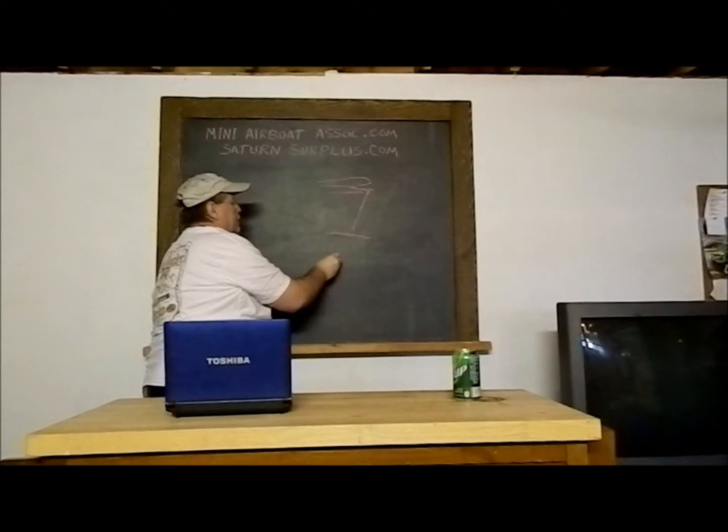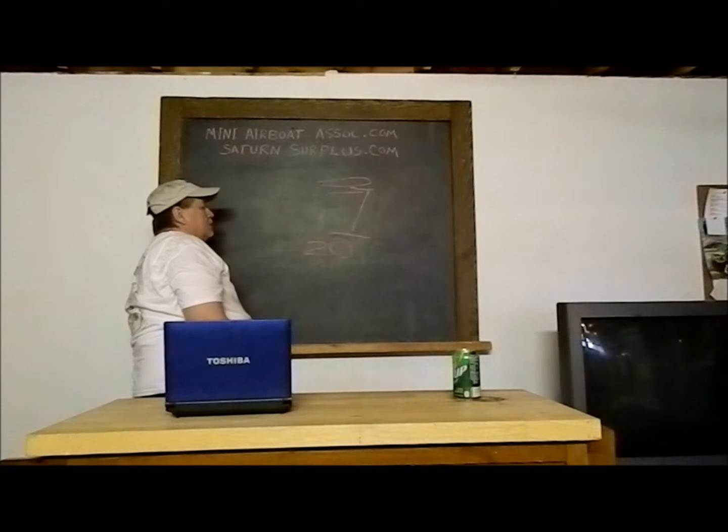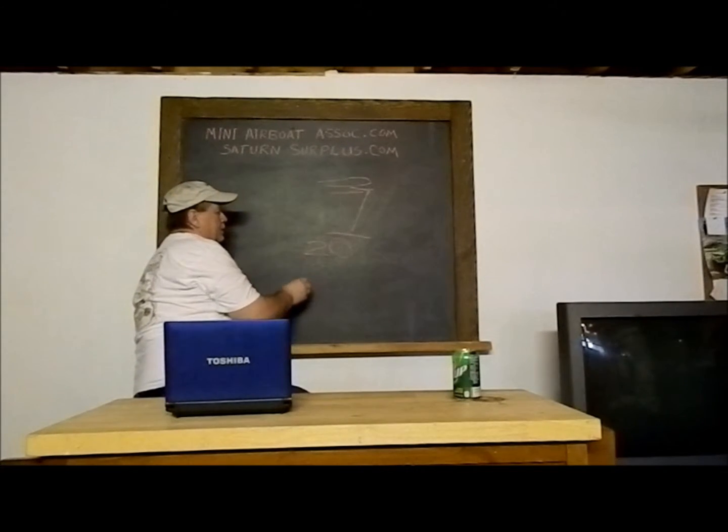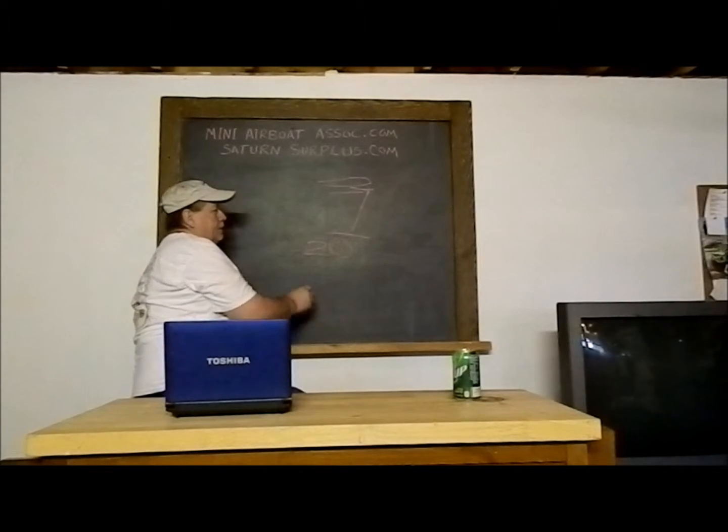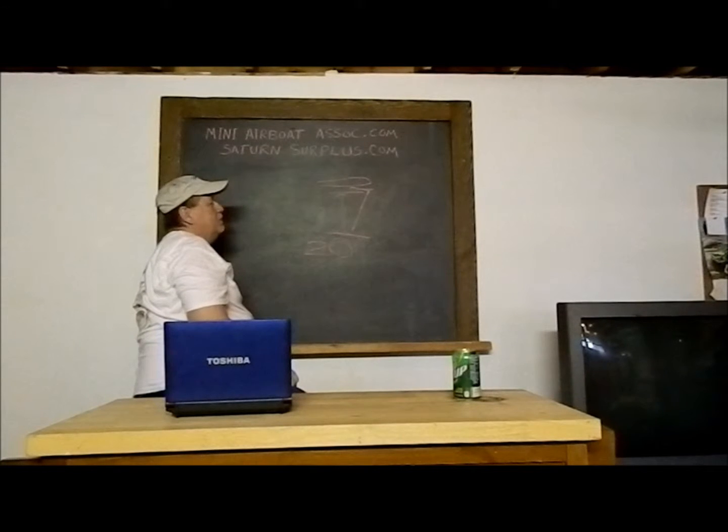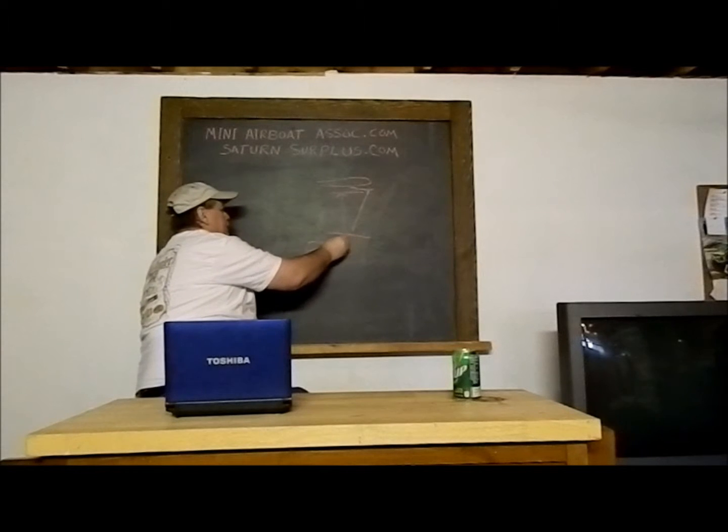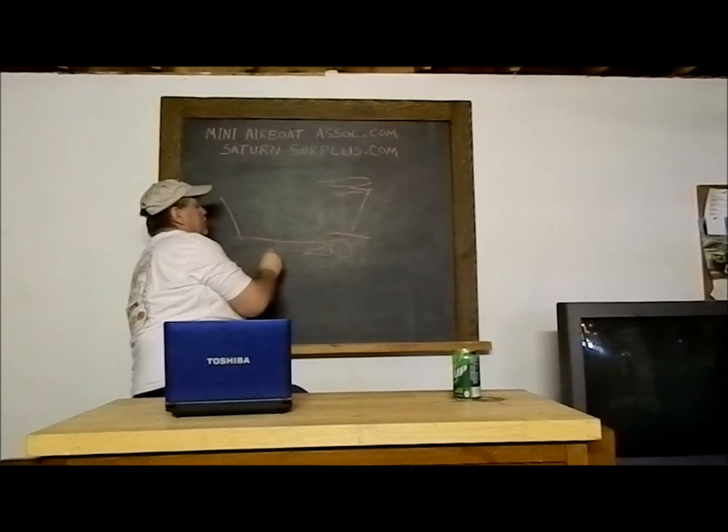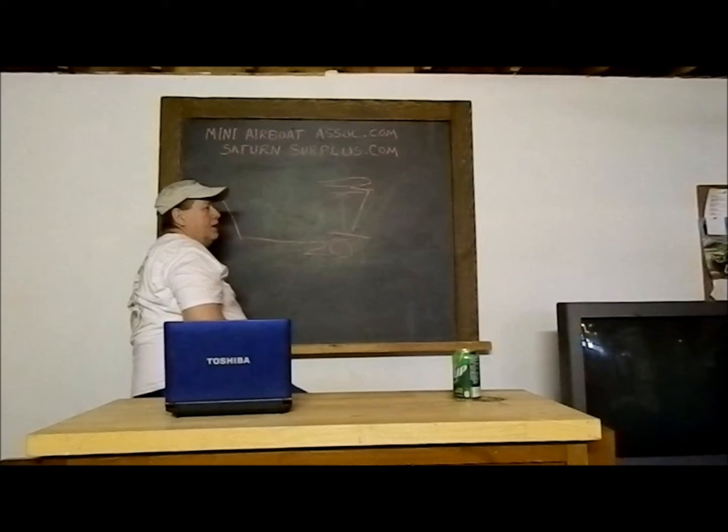My opinion is that the gunnel should be about 20 inches. 20 inches gives you a little bit of a side, so if you have small children in the boat or something, you have enough depth to make it safe for them to be moving around the boat. And also, if you're going to be running some rough water, it's nice to have a higher gunnel.